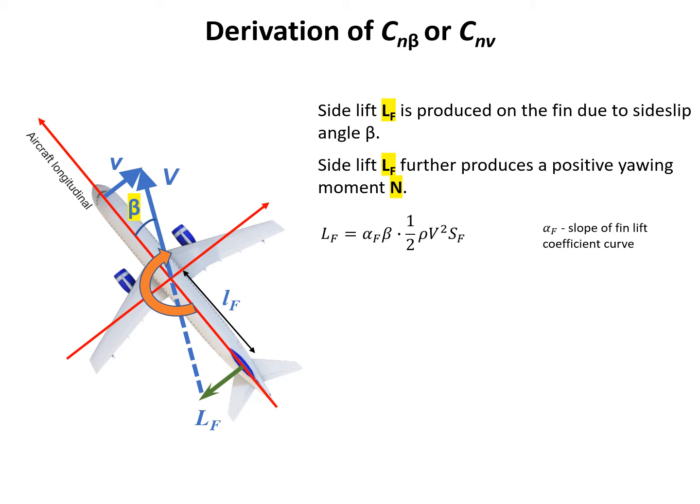Now we need to derive how to write down L_F and N. The L_F is side lift on the fin. We know α_F is the slope of fin lift coefficient curve. α_F times β only gives you the lift coefficient. Since L_F is dimensional, we need to multiply by ½ρV²S_F to get the dimensional side force. Then the side force times its arm will produce the yawing moment N.